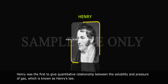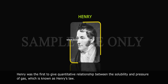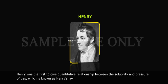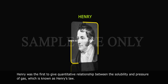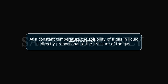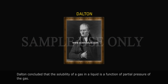Henry was the first to give a quantitative relationship between the solubility and pressure of a gas, which is known as Henry's law. The law states that at a constant temperature, the solubility of a gas in a liquid is directly proportional to the pressure of the gas. Dalton concluded that the solubility of a gas in a liquid is a function of the partial pressure of the gas.